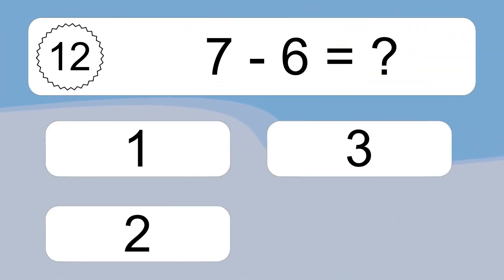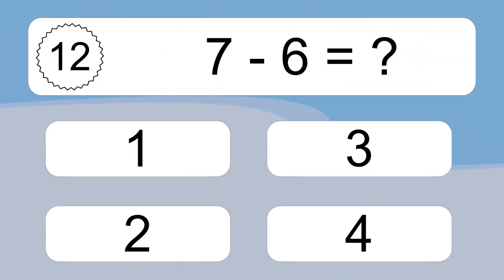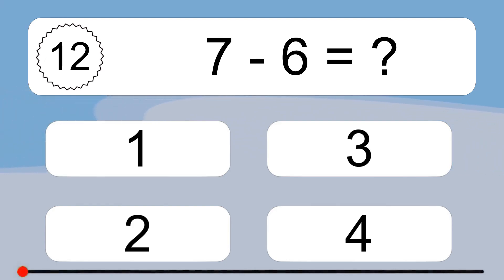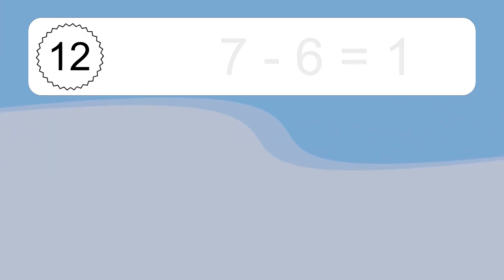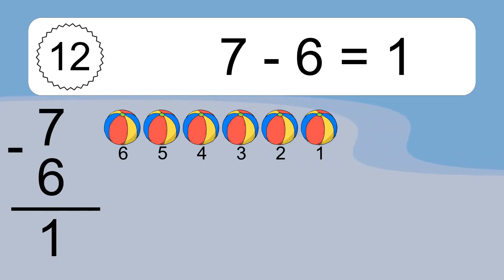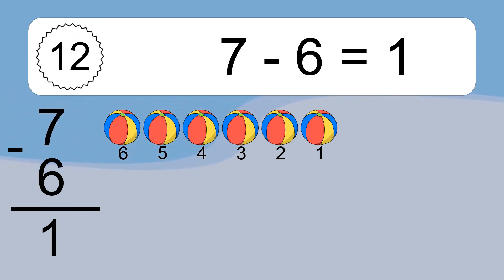7 minus 6 equals what? 7 minus 6 equals 1. Let's count it: 6, 5, 4, 3, 2, 1.